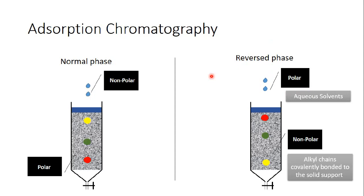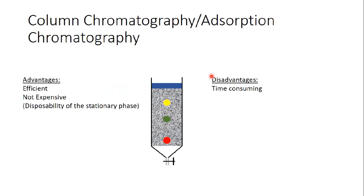This is reverse phase and normal phase chromatography. Adsorption chromatography, like any other technique, has advantages and disadvantages. The advantages are efficiency and simplicity — it's easy to apply and I can get really good results. It's also not expensive, especially because the stationary phase is reusable — I can flush it again with the mobile phase and reuse it. The disadvantage is that adsorption chromatography can sometimes be time-consuming.